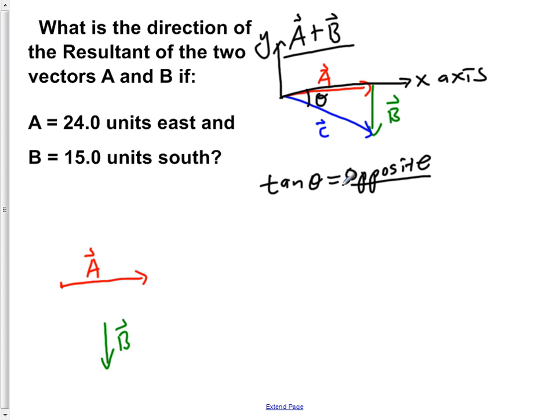So the opposite is vector B and our adjacent is vector A. Now if we solve for just theta, take the tan inverse of both sides. So that gives us just theta on the left hand side. Now we have tan inverse of vector B over vector A.